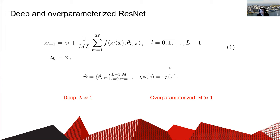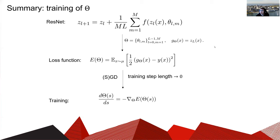In this talk we say ResNet is deep if l is very large, and over-parameterization means m is very large. Under this setting we can also write down the formula of the loss function. In our work we consider the continuous limit of SGD or GD, meaning that we let the training step go to zero. Then theta is tuned from our gradient flow, which is an ODE, where s represents the training time.